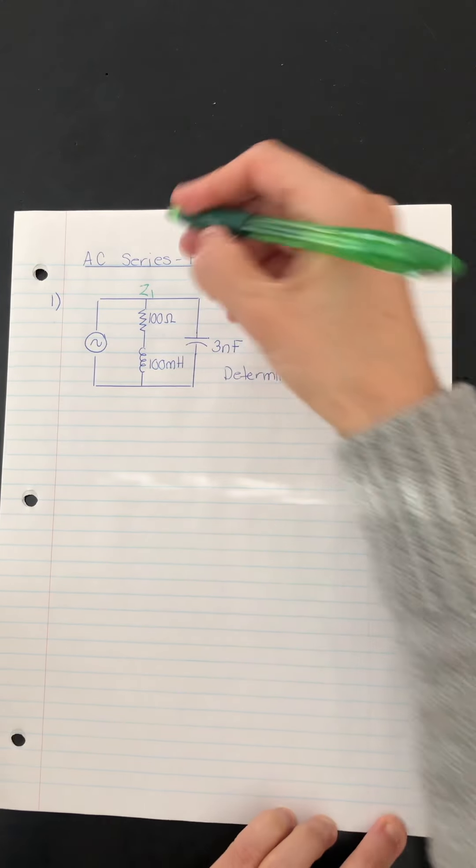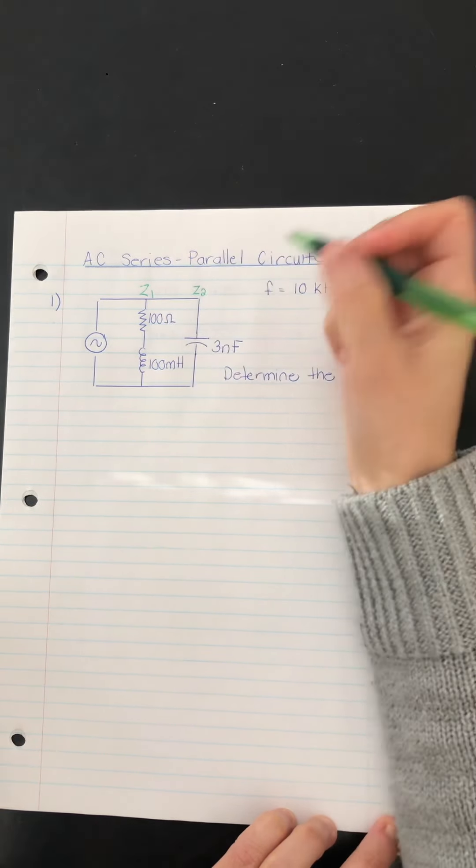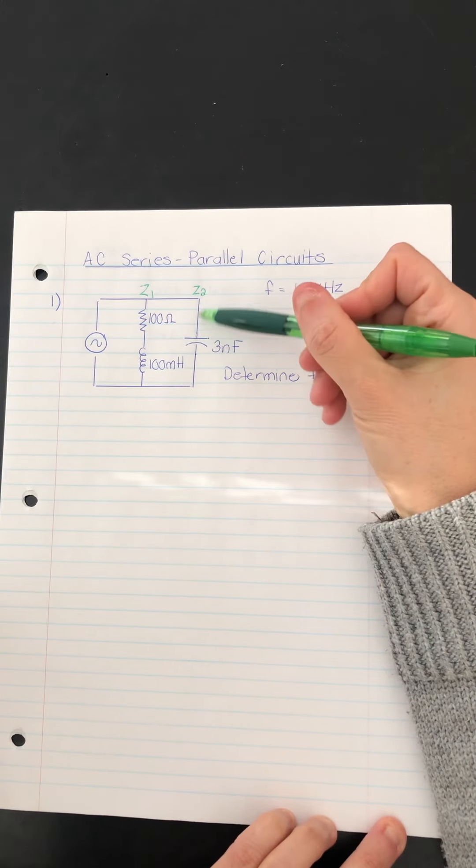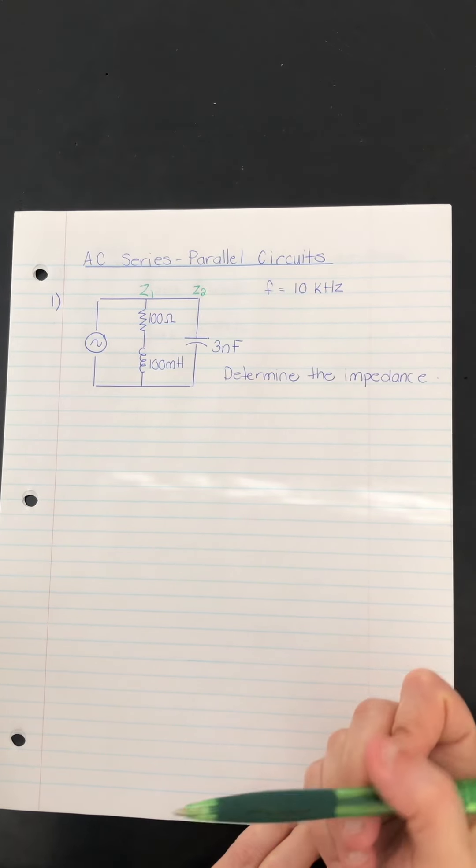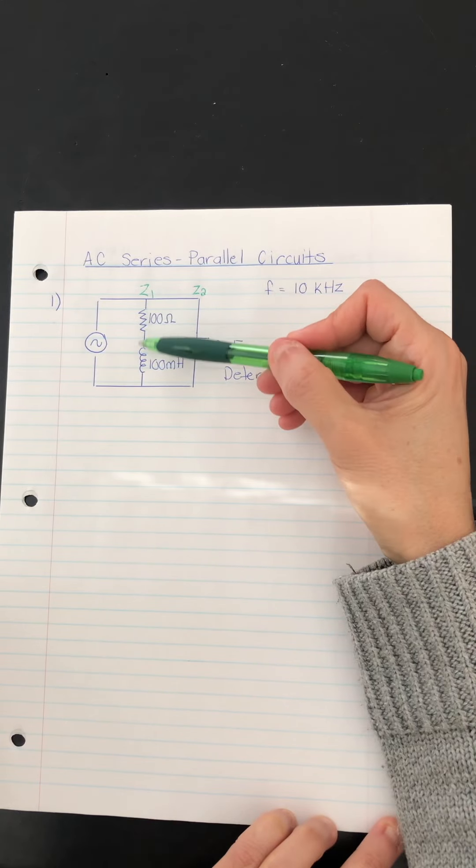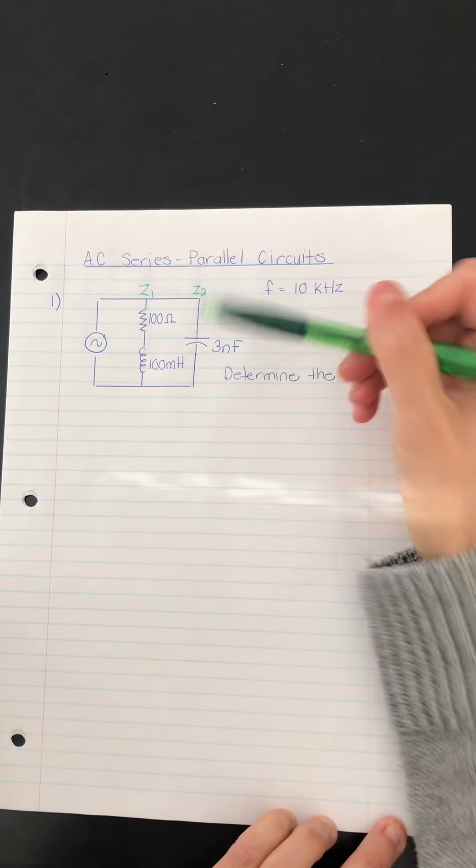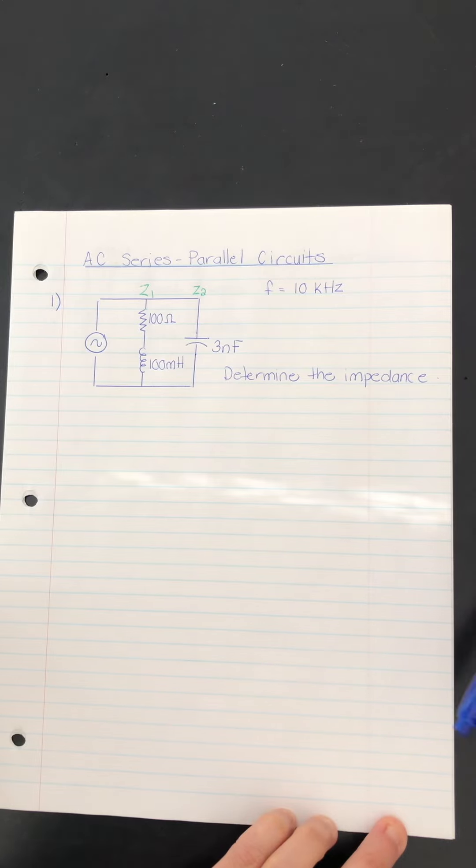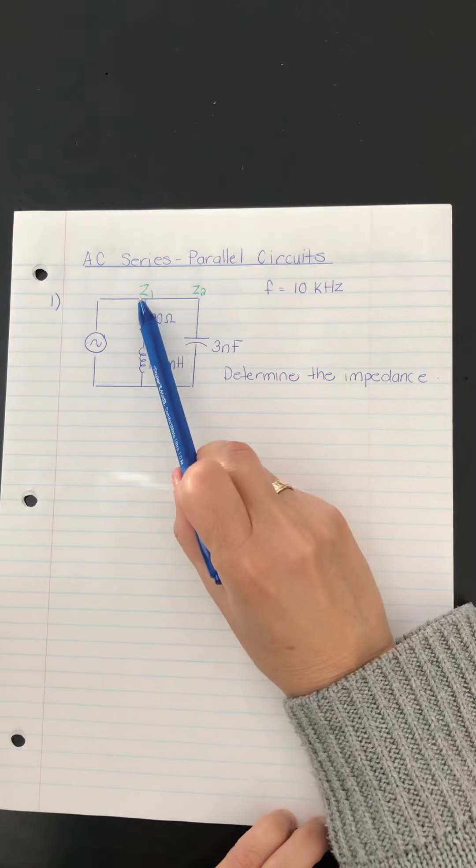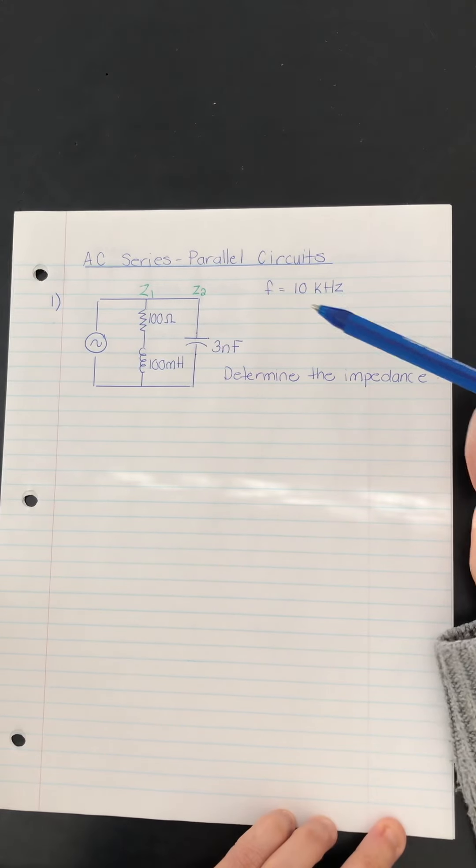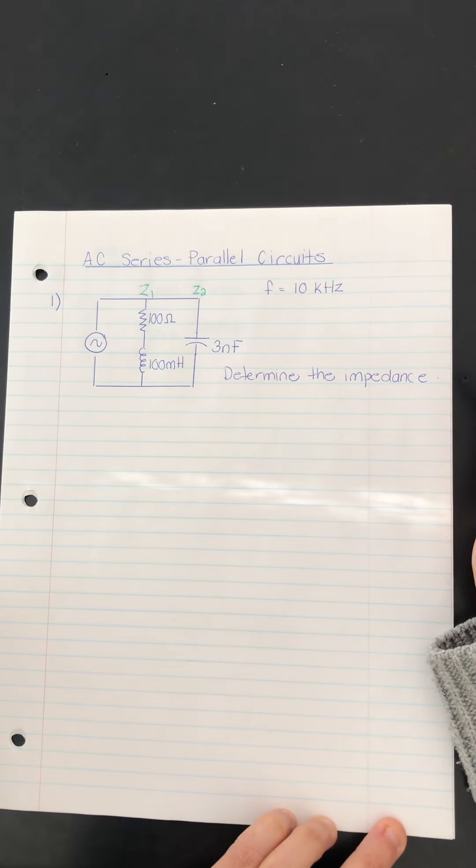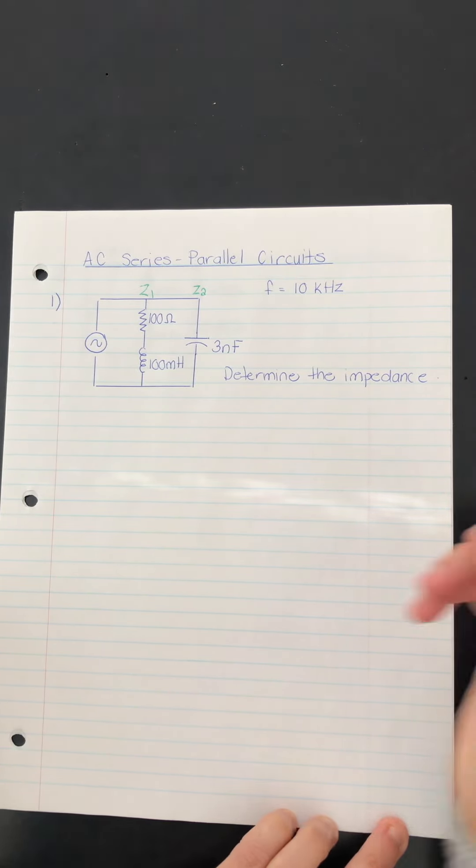And this branch here is Z2, which contains only a capacitor. So what we do is first write an expression for the impedance Z1 and the impedance Z2. And in order to do that, we use the series formula.